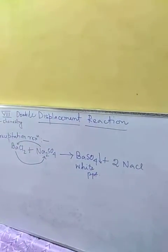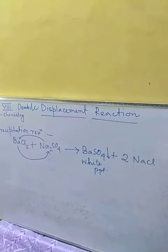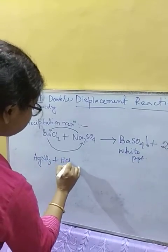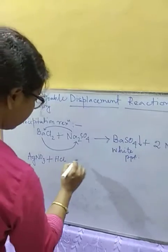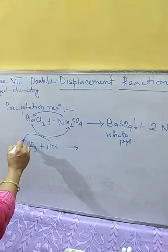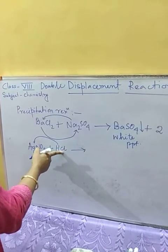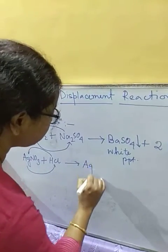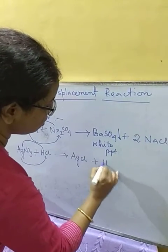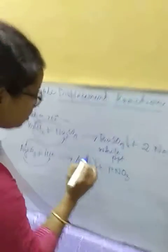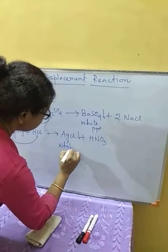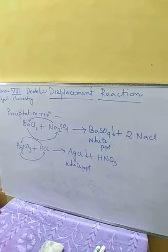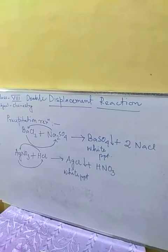Similarly, silver nitrate (AgNO₃), which is colorless, when reacted with dilute hydrochloric acid (HCl), undergoes double displacement. Hydrogen leaves chlorine and joins with nitrate, while silver joins with chlorine to produce silver chloride (AgCl) plus nitric acid (HNO₃) in solution. Silver chloride gives a curdy white precipitate.